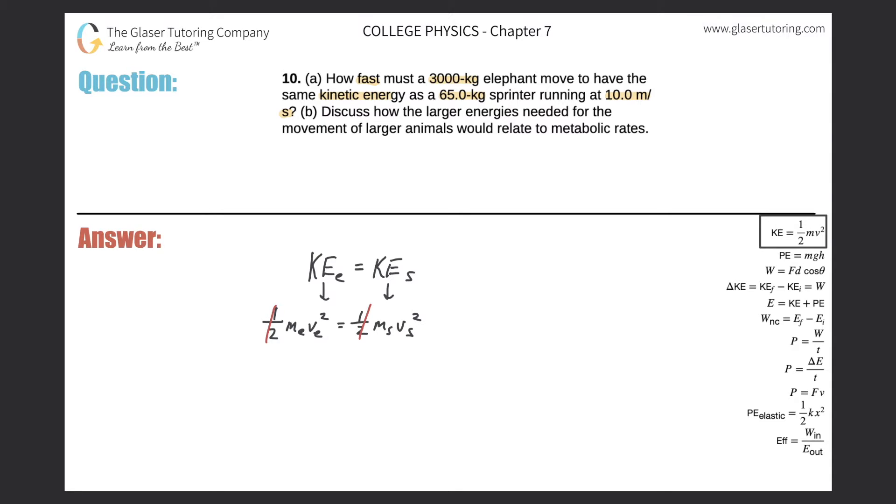What are we looking for? Well, we're looking for the speed of the elephant. So we should know all the other variables, and we do. What's the mass of the elephant? They told us it's 3,000 kilograms. Actually, you know what?